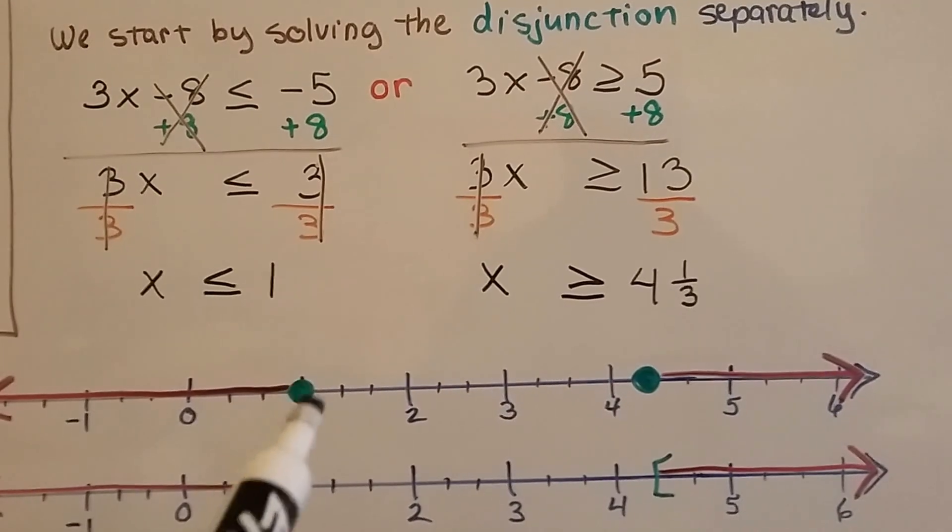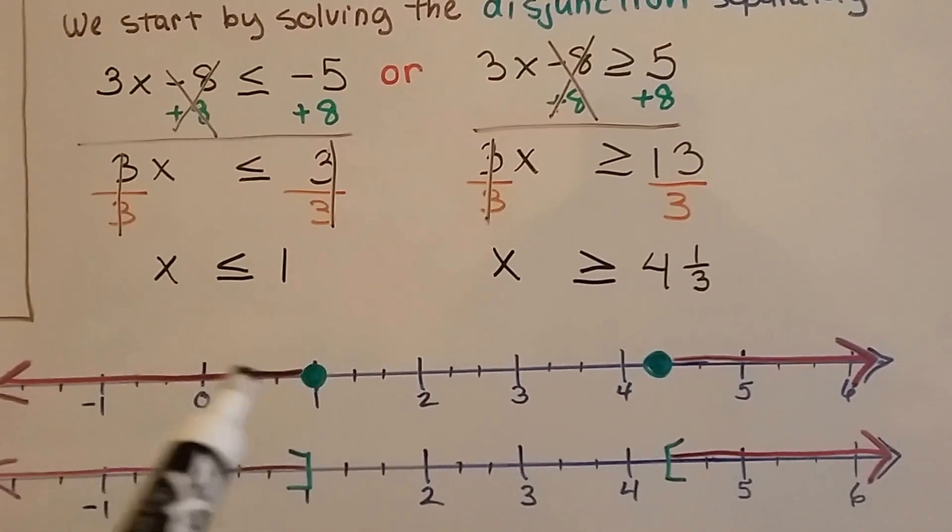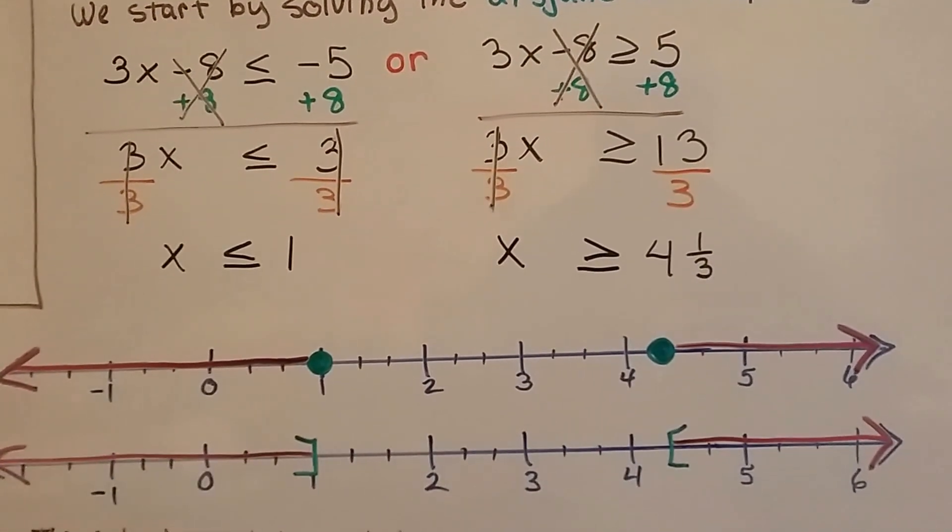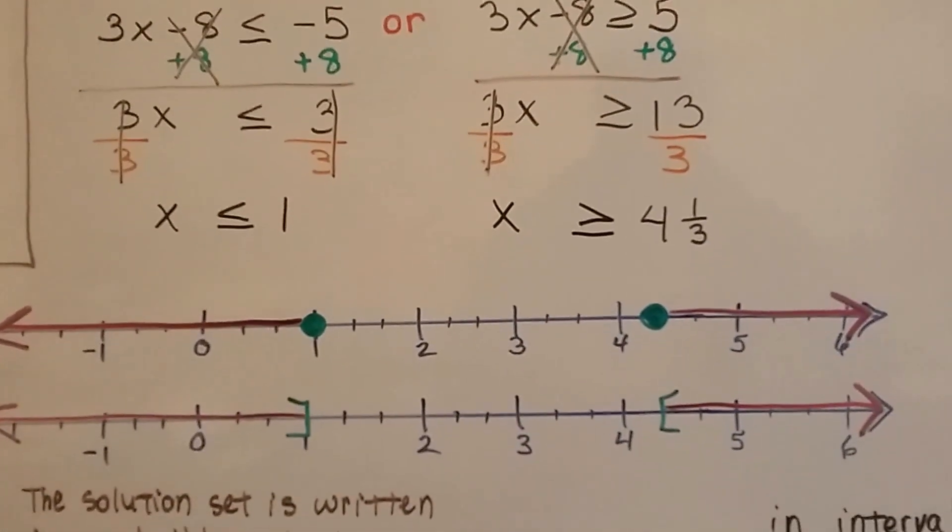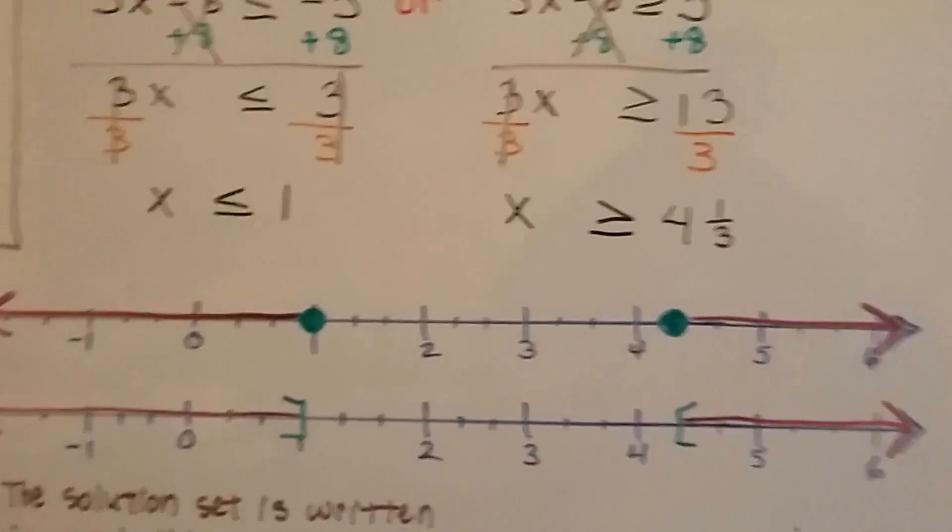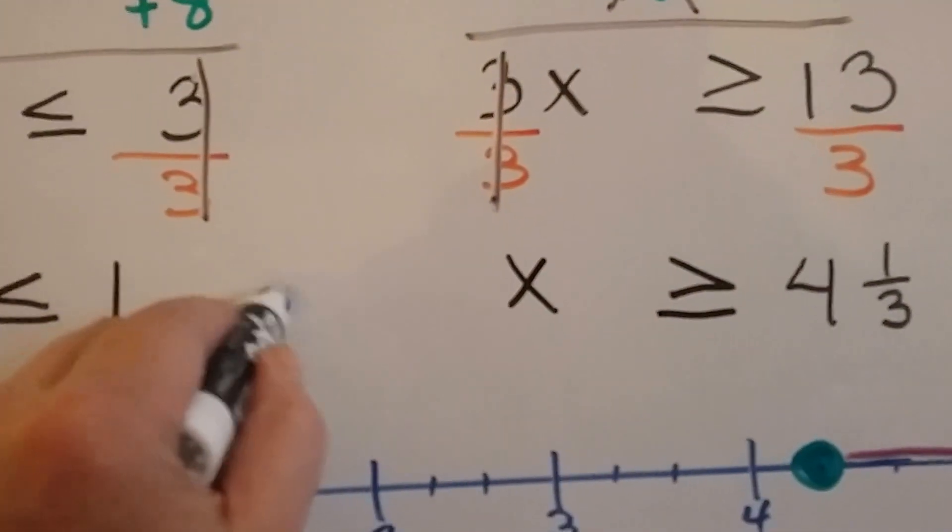And I've got it on the 1, because it's or equal, going into the negatives. And I've got two sections of the number line that are graphed. And that's because of the word or in between here.